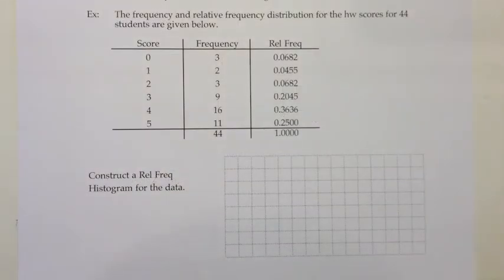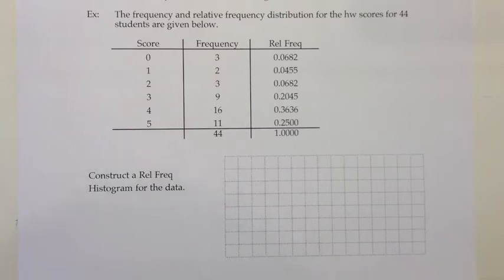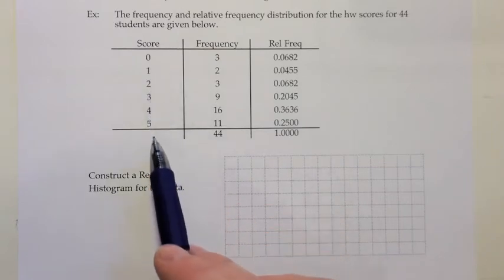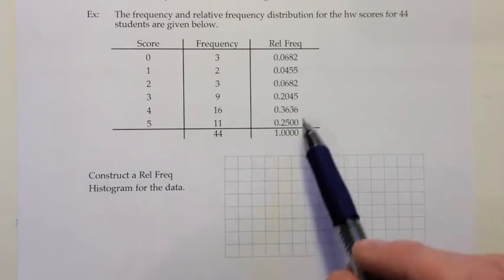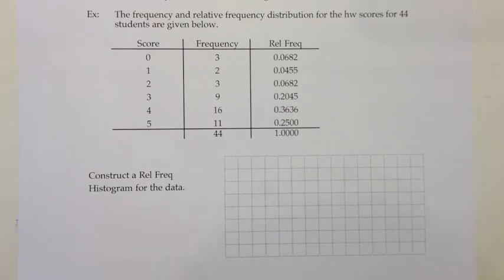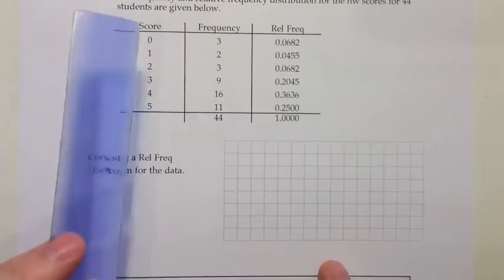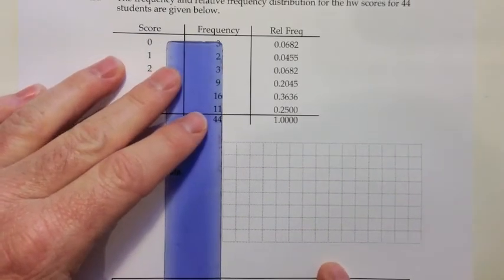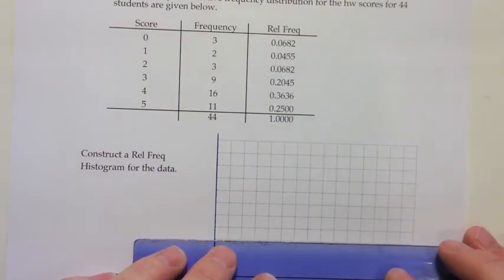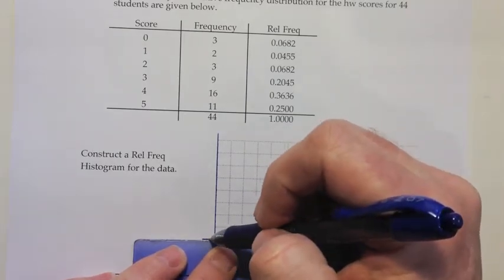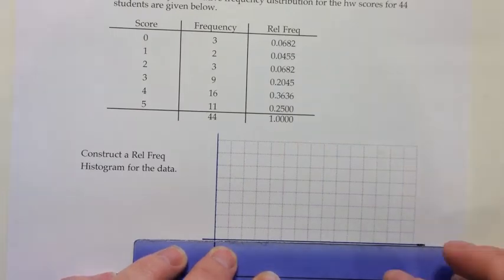Continuing with section 2.2, we'll now look at an example for quantitative data where we've done grouping with single values. The frequency and relative frequency distribution for the homework scores of 44 students are given — scores range from 0 to 5 with frequencies and relative frequencies provided. We'll construct a relative frequency histogram using those relative frequencies for the bar heights.